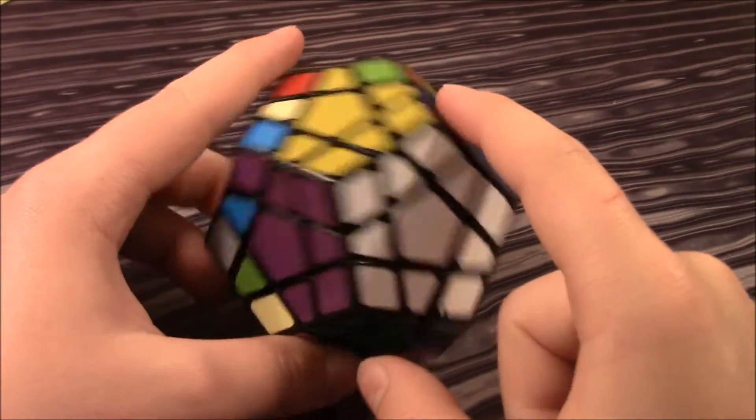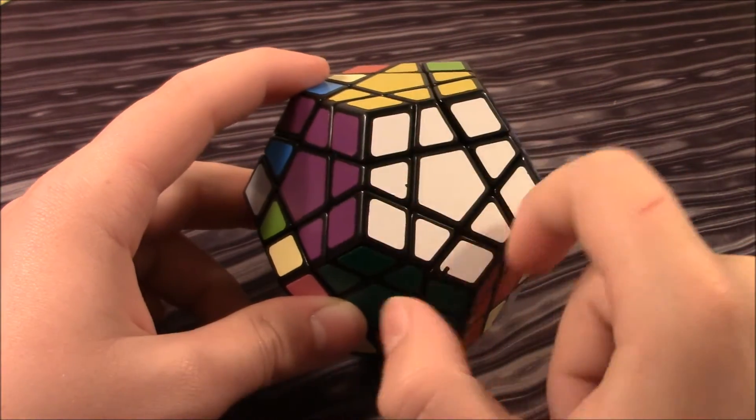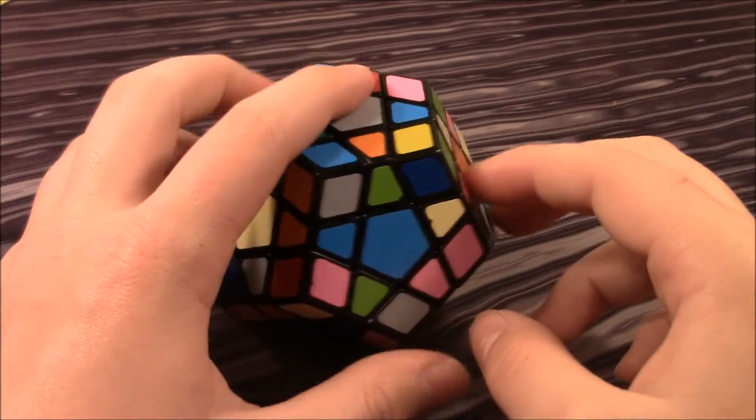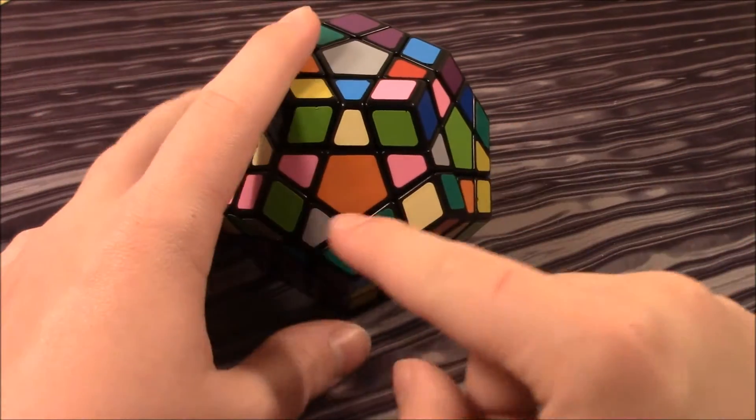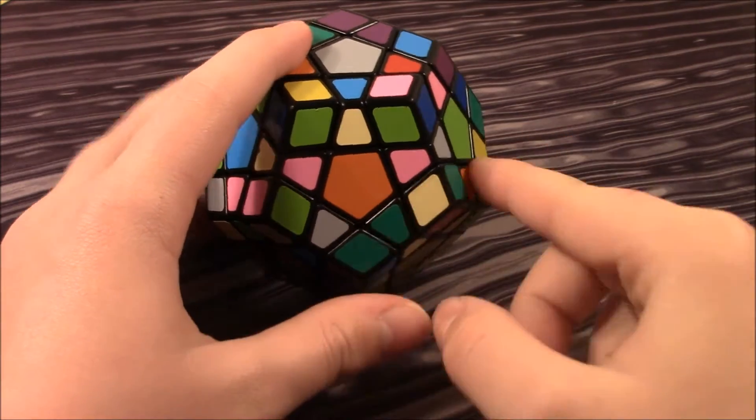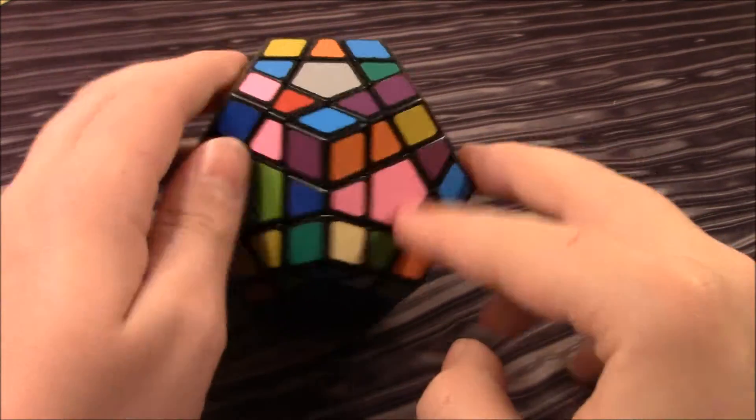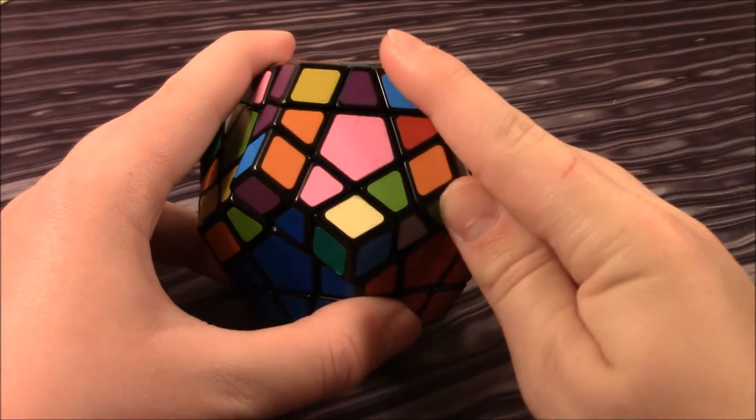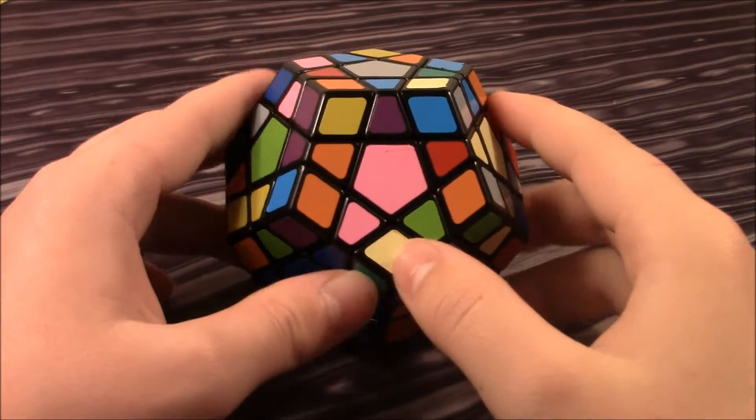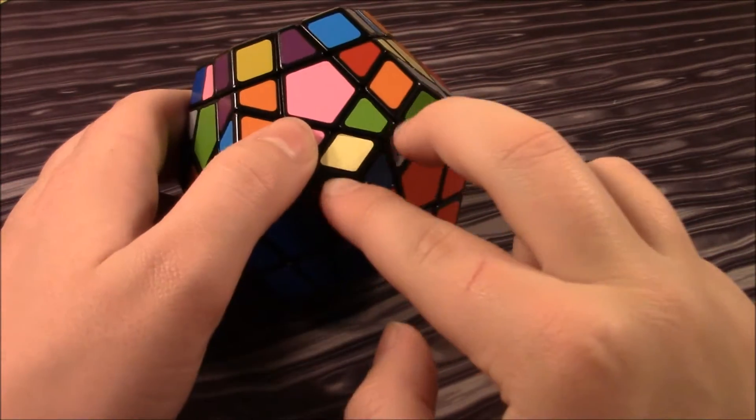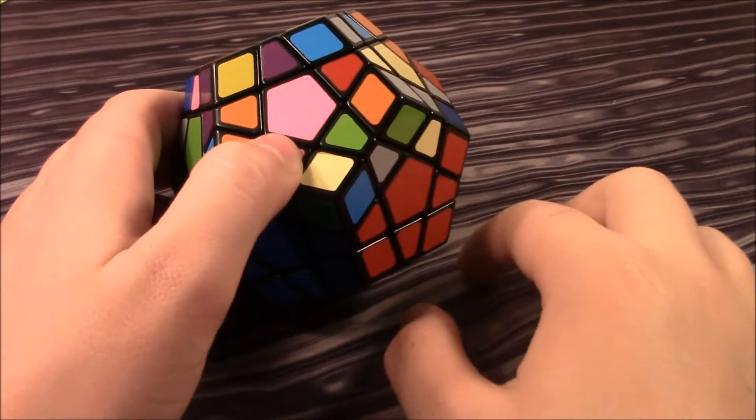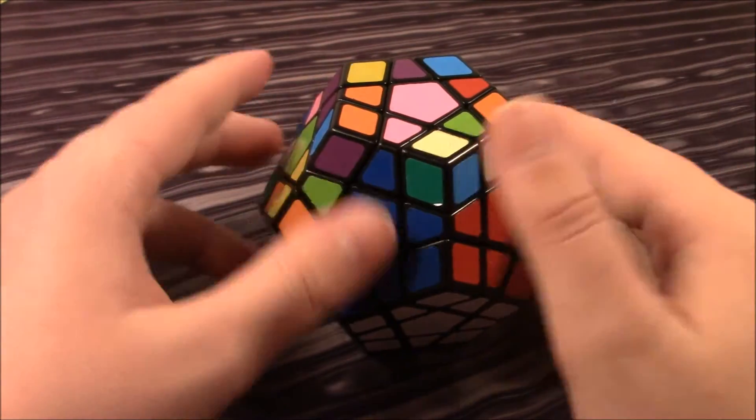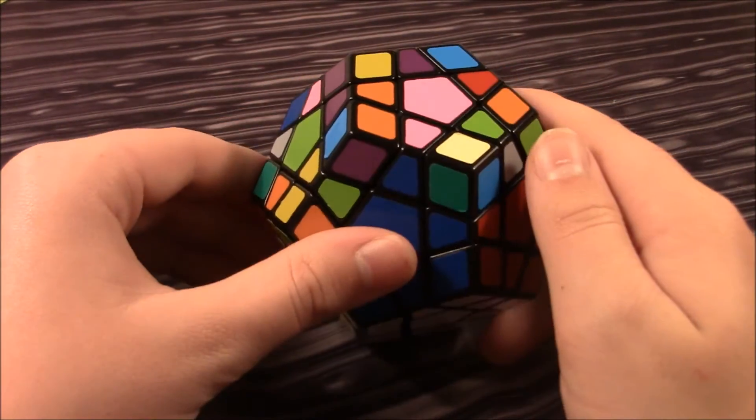So you should have a Mega Minx that looks kind of like this. After that, you move on to solving these Vs, which is just like inserting an edge, like right here, and then solving an F2L pair. Right here. So in this case, since this edge is already done, then we're going to solve that.